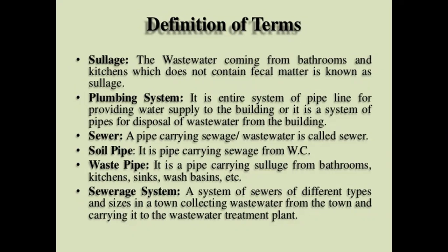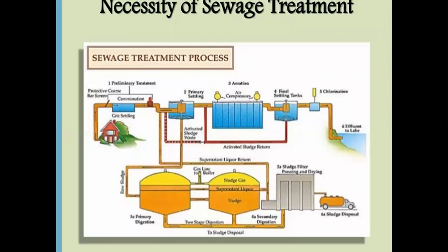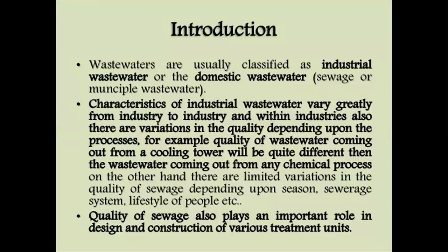This is the necessity of a sewage treatment plant and its flow diagram. The first stage is preliminary treatment: collecting water through a grid chamber. The second is primary settlement. The third is aeration, where the whole process is done in the presence of oxygen. The fourth is the final settling tanks. The last stage is chlorination, after which the effluent is discharged to a lake or stream.